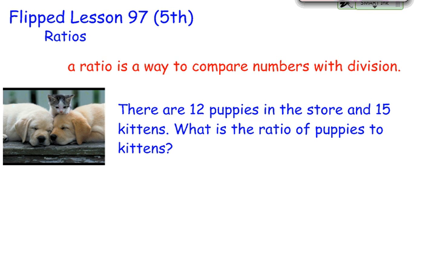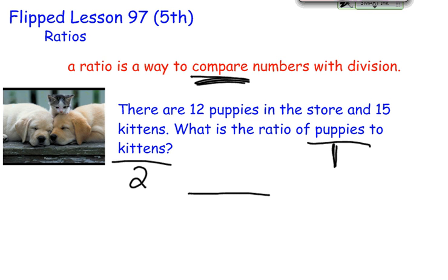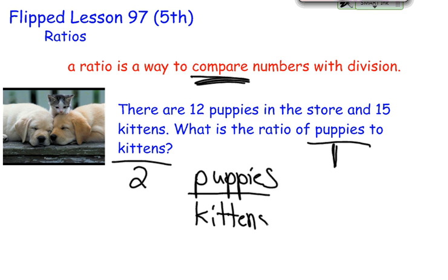What is the ratio of puppies to kittens? We're making a comparison — we want to compare puppies to kittens. So in ratios, to figure out what the numerator is — the top of the fraction — we've got to really pay attention to what the question is asking. It's saying what is the ratio of puppies, right? Puppies comes first, to kittens, which comes second. Because puppies comes first, puppies is on top — puppies is the numerator. And since kittens comes second, kittens is the bottom of the ratio. That word order is very important.